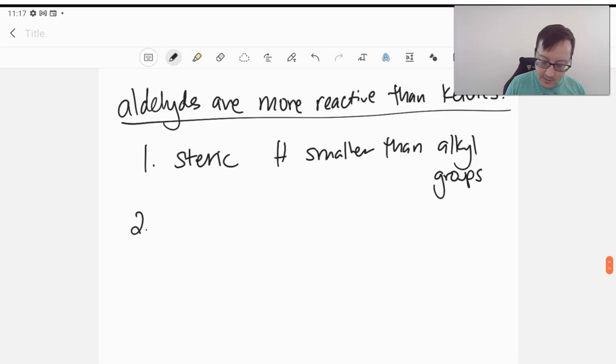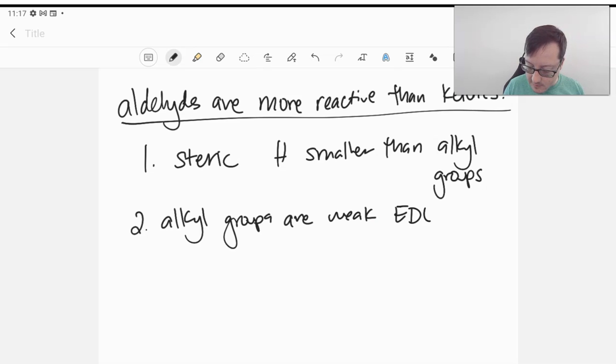Secondly, we understand that alkyl groups are weak electron-donating groups. Electron-donating groups through hyperconjugation add electron density, and therefore it's a worse electrophile.